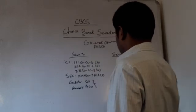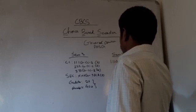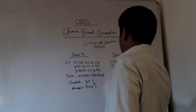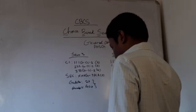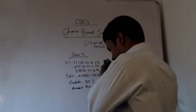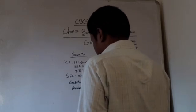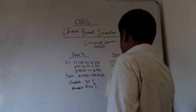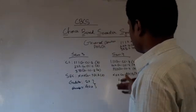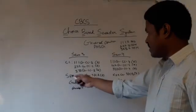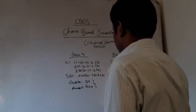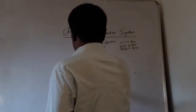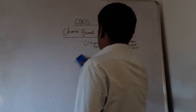Semester four similarly has three core courses — 111G CC4, 222G CC4, and 333G CC4 — each worth six credits. There is one more skill enhancement course, SEC type B, worth two credits. The total number of credits is 20 and the total marks remain 400 across four papers. This is pretty similar to the earlier semesters, now with a skill enhancement course added.